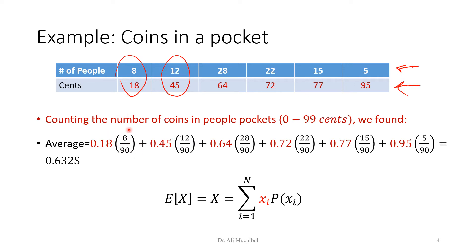Counting the number of people: we get a total of 90. The probability of having 18 cents is 8/90, then 12/90, 28/90, and so on. Substituting into the formula and computing, we get 0.632 dollars — about 63 cents. This makes sense: the value is in the mid-range and we have a kind of symmetric distribution.